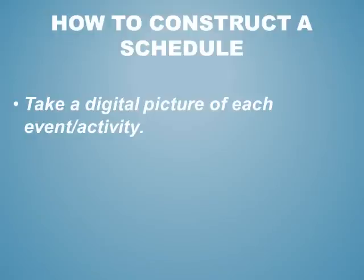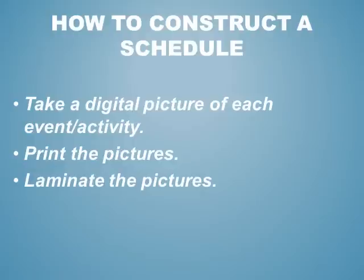Next, you want to take a digital camera and take a picture of every event or activity that you've identified. After that, print those pictures out. Find a laminating machine — available at Office Depot or Office Max, or in most school districts and churches. You could also use clear contact paper, though a laminating machine is preferable. Laminate the pictures to make them much more durable — they can be taken off and put on, dropped on the floor, and they won't tear or crumble easily.